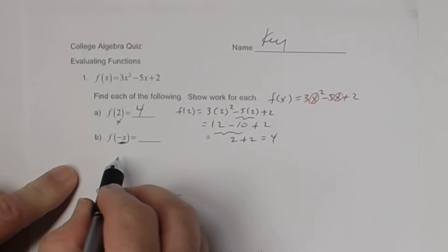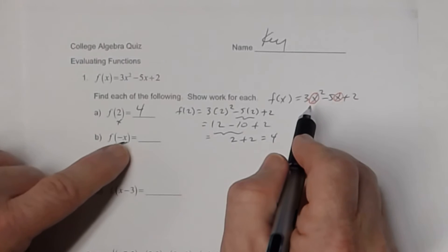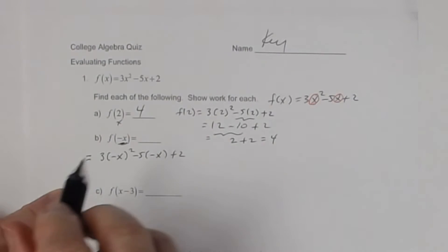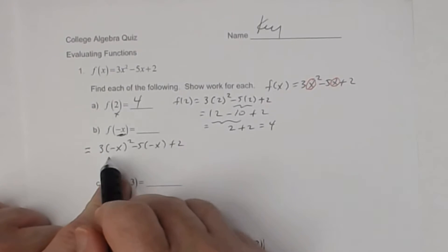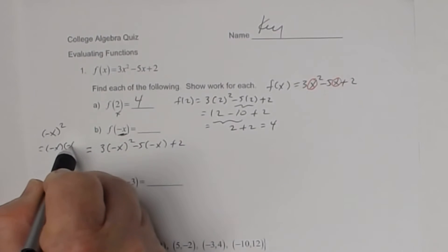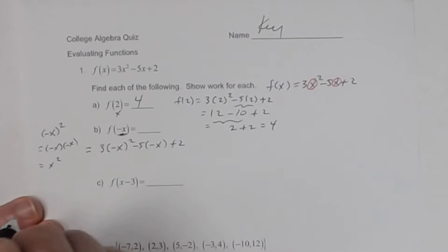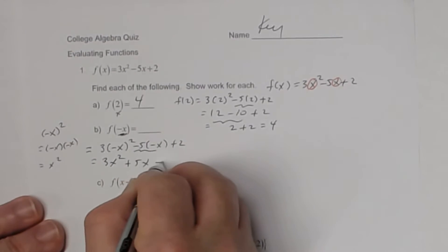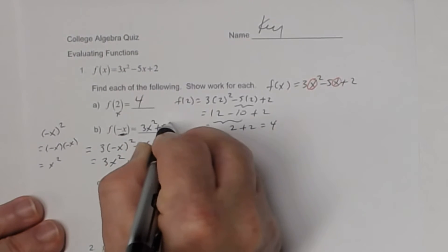So here's what that's going to look like. Again, wherever I have that x — I circle those — I'm going to substitute a negative x. So this becomes 3 times negative x squared minus 5 times negative x plus 2. Using the order of operations, I have to do exponents first. A negative x squared means negative x times itself — a negative times a negative is positive, and x times x is x squared. So negative x squared is equivalent to x squared. That becomes 3x squared, and negative 5 times negative x is positive 5x, and then plus 2.